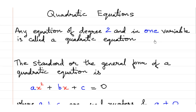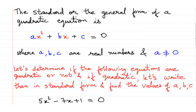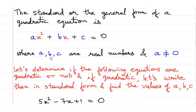In this video we are going to learn what are quadratic equations. Any equation of degree 2 and in one variable is called a quadratic equation. The standard or the general form of a quadratic equation is ax² plus bx plus c is equal to 0. Now, it is very important to note that a, b and c are all real numbers and a is not equal to 0.